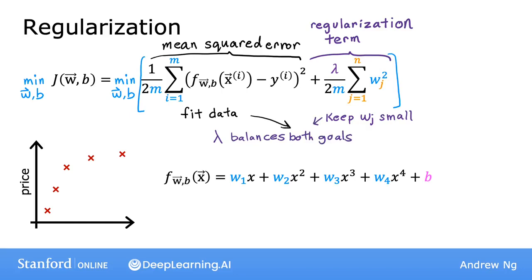Let's look at what different values of lambda do using the housing price prediction example with linear regression. If lambda is set to zero, you're not using the regularization term at all, since it's multiplied by zero. You end up fitting an overly wiggly, overly complex curve that overfits.